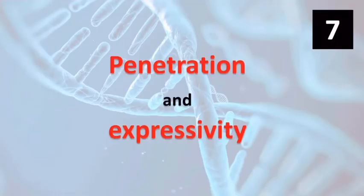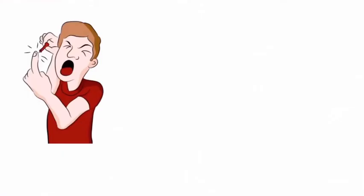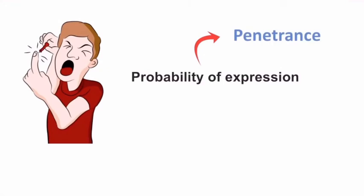Our next pair terms are really very confusing. Someone having a genotype might not have the phenotypic expression. For example, mutation in BRCA1 causes breast cancer. But all the people having the BRCA1 mutation do not have breast cancer. The probability of expression is known as penetrance. So how a genotype penetrates into its phenotypic expression? That is the penetrance.